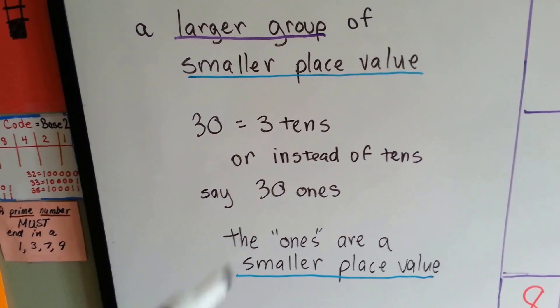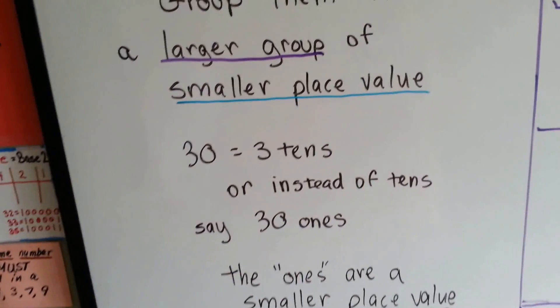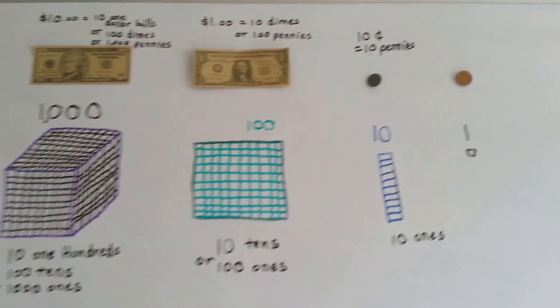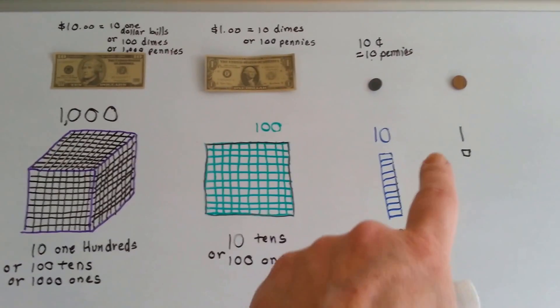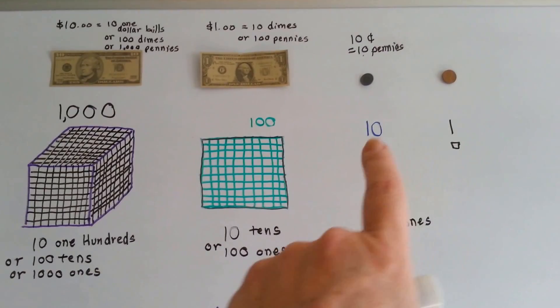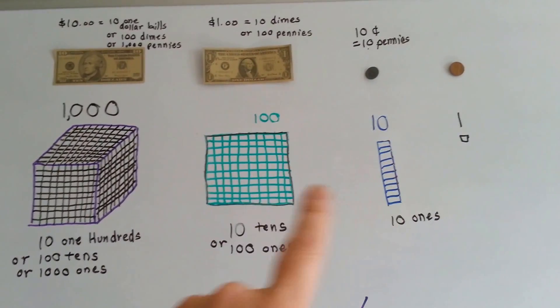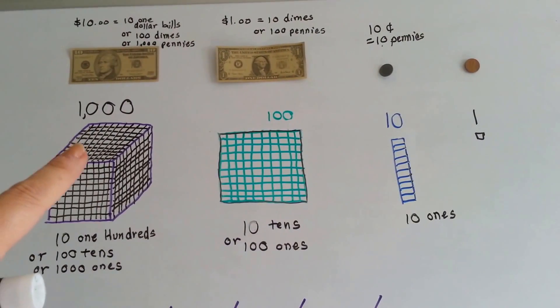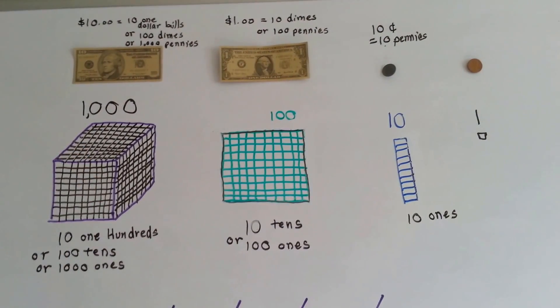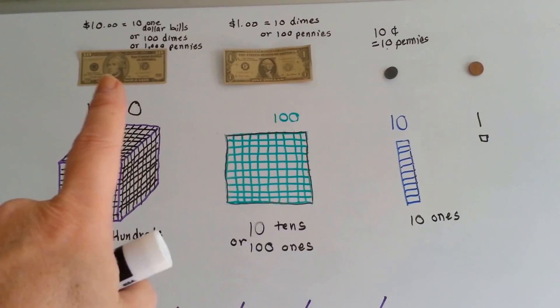The ones place is a smaller place value, and we put more of them in it. I'm going to show you something, and I'm going to use money, which everyone understands, to explain my point. We have one little square here. We have ten squares here — that's ten, a bar of ten. Here we have a flat of a hundred, and we have a cube of a thousand. These are exactly the same as money.